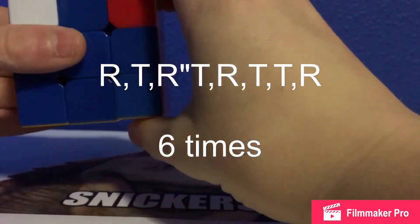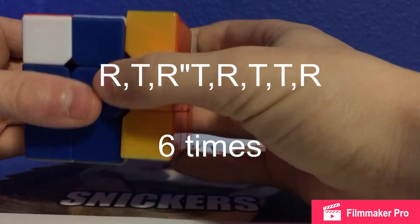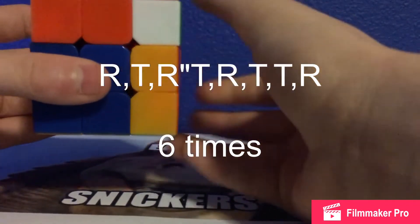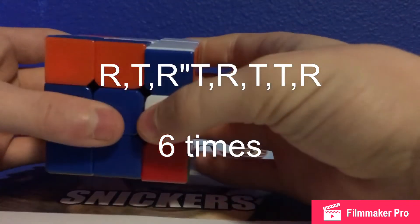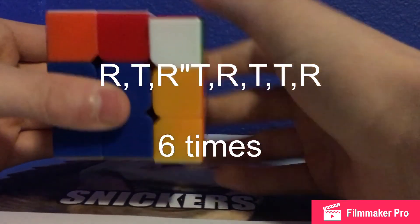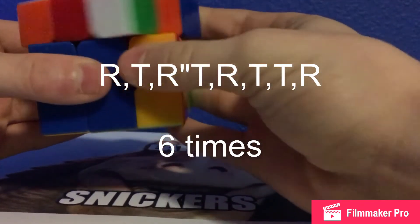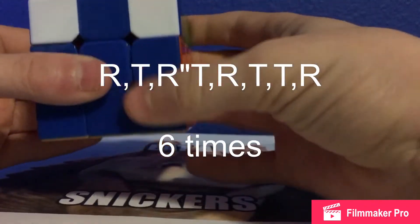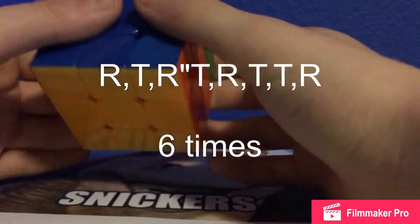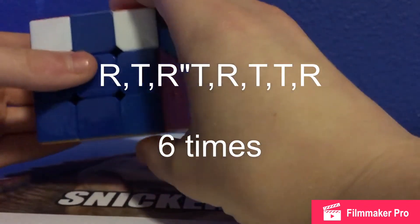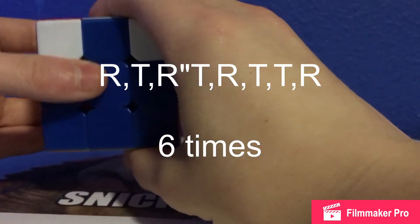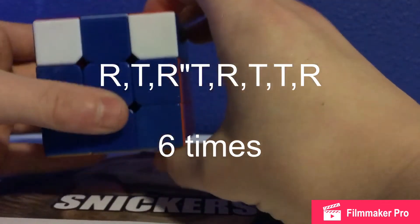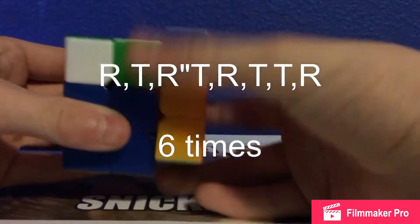But just for now: right clockwise, top clockwise, right counterclockwise, top clockwise, right clockwise, and then top clockwise twice, and then right counterclockwise. So yeah, do this four more times. I will leave the algorithm up for you guys to look at, and I'll do it decently slow for you guys.